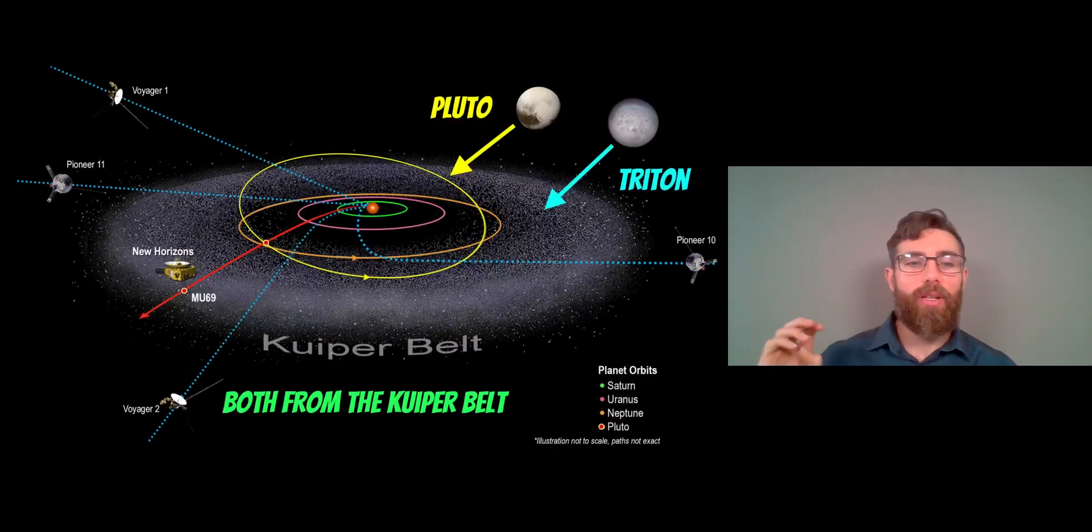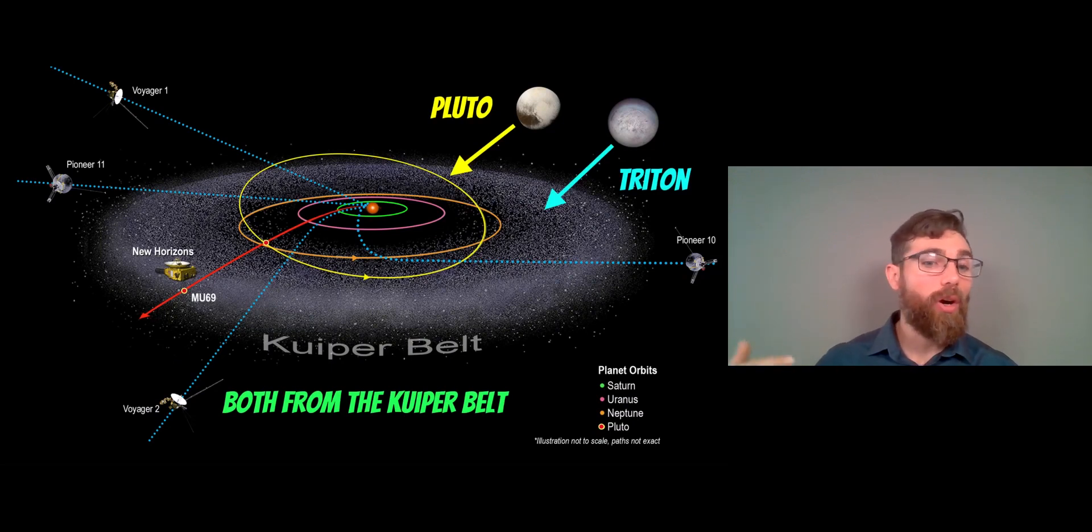Because they have a common origin of where they formed, where they were originally. So Pluto and Triton are Kuiper Belt objects. They were originally in the Kuiper Belt. Pluto is still there. And Pluto is the largest current Kuiper Belt object. It's the largest one in the Kuiper Belt at the moment, which is why it's not classified as a planet. It's a dwarf planet.